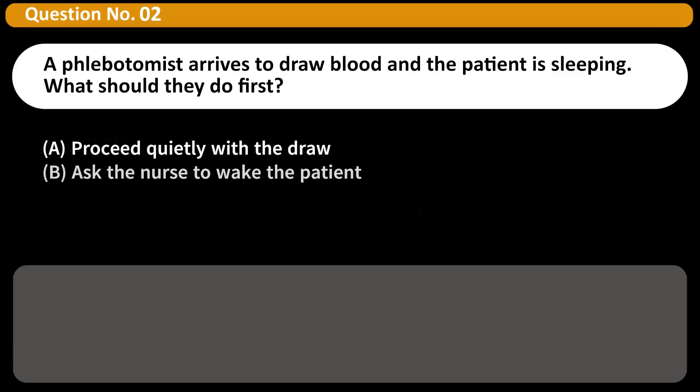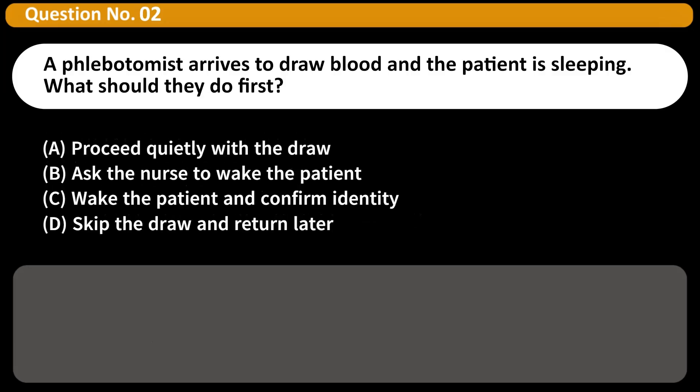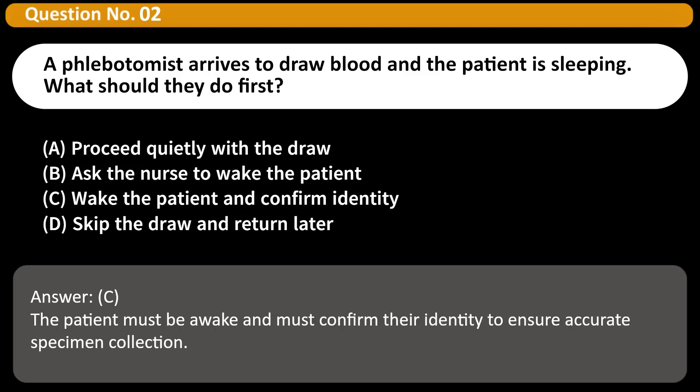A phlebotomist arrives to draw blood and the patient is sleeping. What should they do first? A. Proceed quietly with the draw. B. Ask the nurse to wake the patient. C. Wake the patient and confirm identity. D. Skip the draw and return later. Answer: C. The patient must be awake and must confirm their identity to ensure accurate specimen collection.